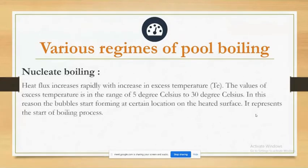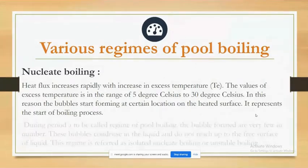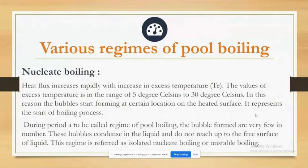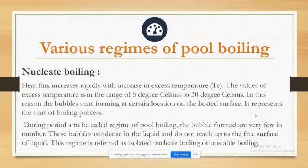Nucleate boiling — heat flux increases rapidly with an increase in excess temperature ΔT_e, with values in the range of 5°C to 30°C. In this regime, bubbles start forming at certain locations on the heated surface, representing the start of the boiling process. The bubbles formed are very few in number; they condense in the liquid and do not reach up to the surface. This regime is referred to as isolated nucleate boiling or unstable boiling.